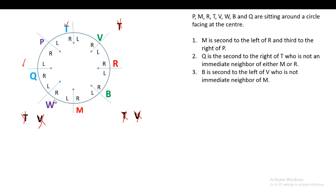With V and B placed, one position remains and that will definitely be for W. So W's position is now fixed. All eight persons' positions are now determined and we can go for the questions.